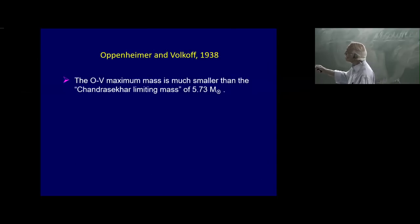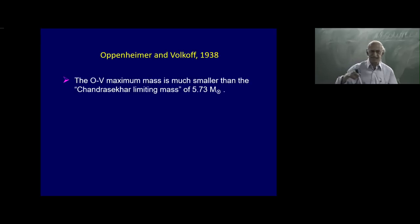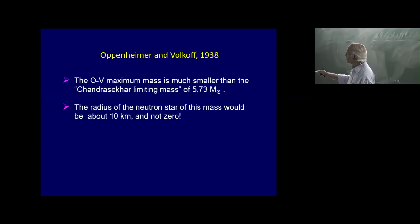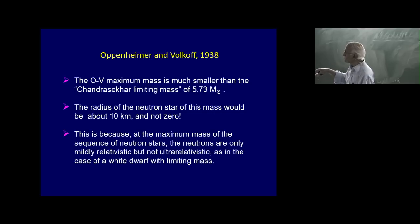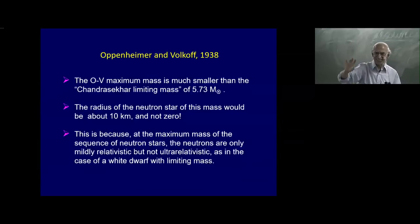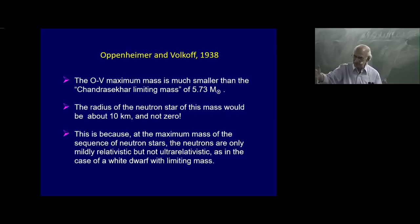Please notice that the Oppenheimer–Volkov maximum mass is much smaller than the Chandrasekhar limiting mass for a neutron star. When the neutron star reaches its maximum mass, it is not fully relativistic — it is mildly relativistic — but it still becomes unstable to collapse. After that, nothing can save it: it becomes a black hole. Don't confuse the maximum mass of a neutron star with its radius going to zero.